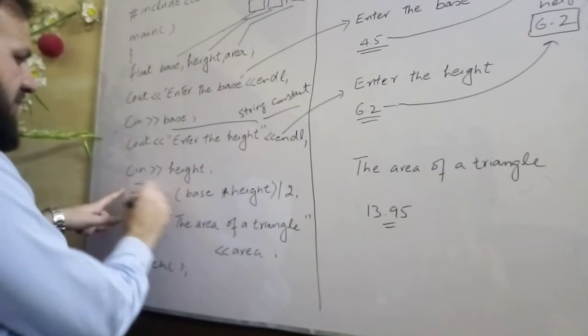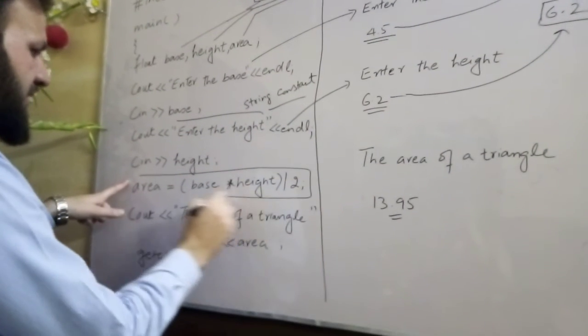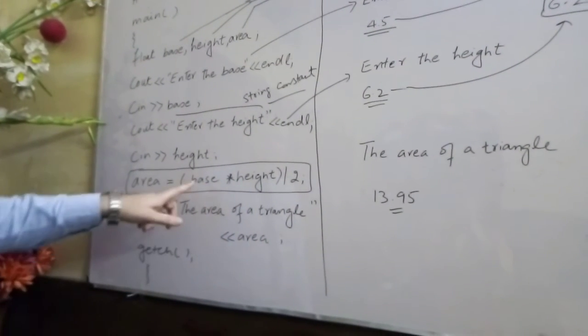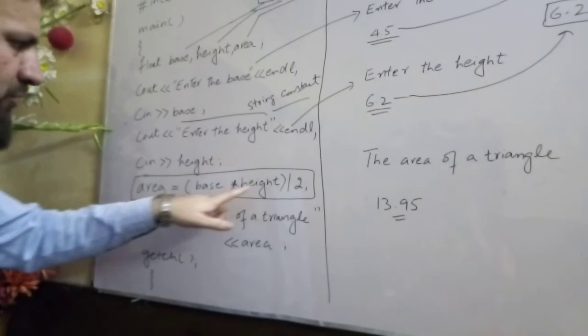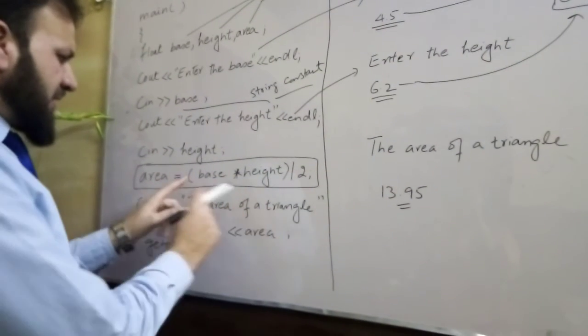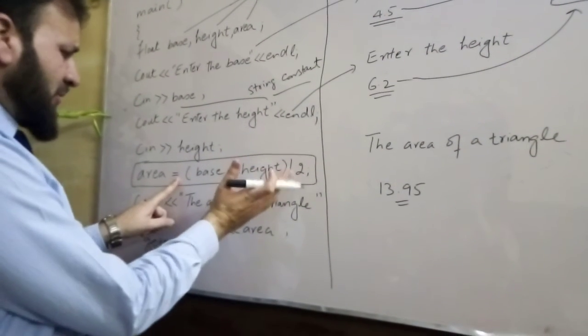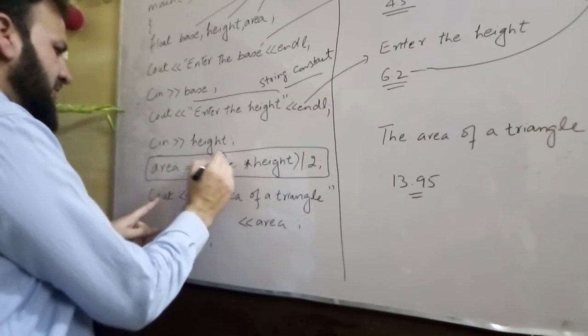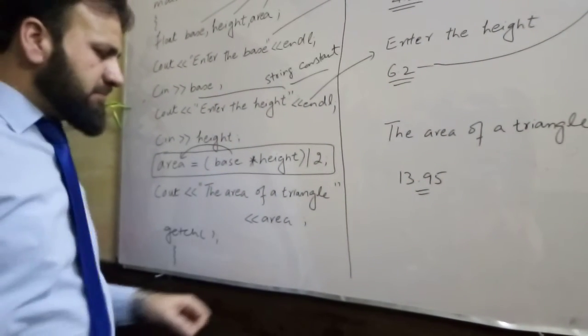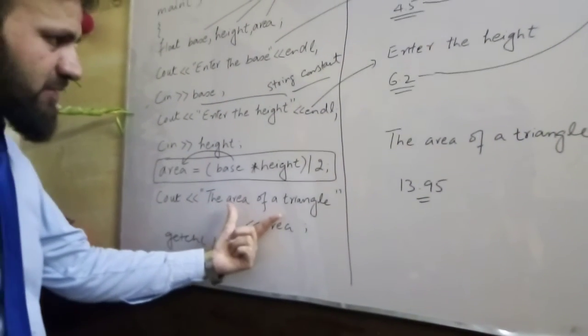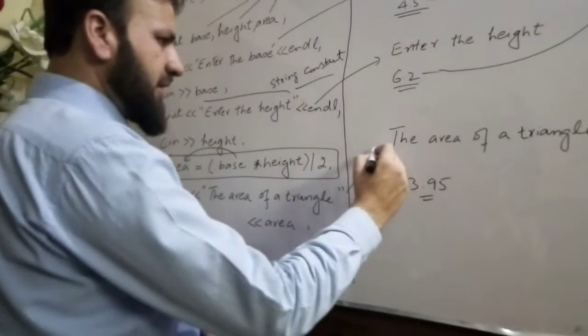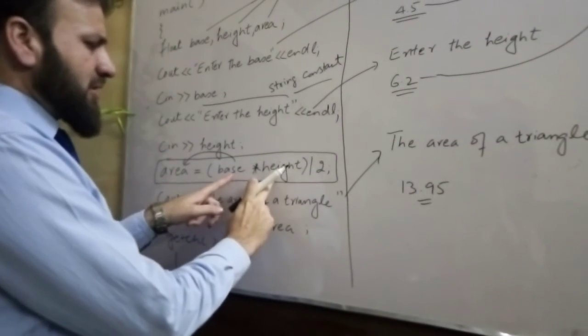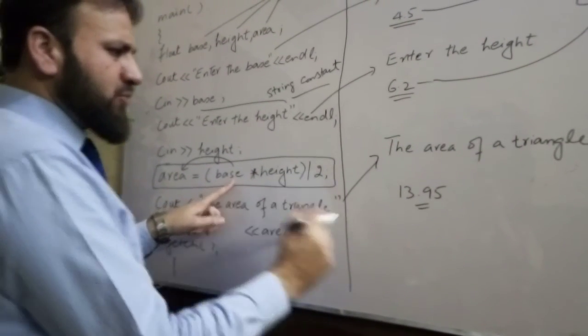The next step is the formula. This is the formula of the area. The base and height are multiplied and divided by 2. In C++, this is the assignment operator and all the values on the right are assigned to the left. Again cout, the area of triangle is displayed, and in the formula, the product is divided by two.